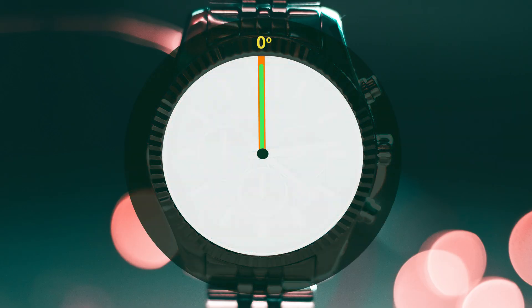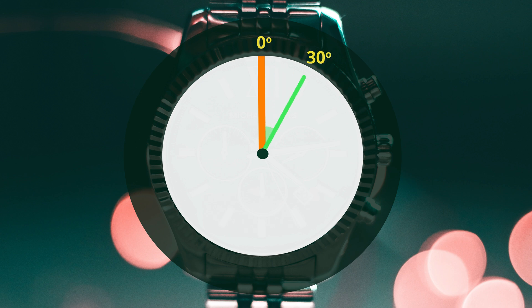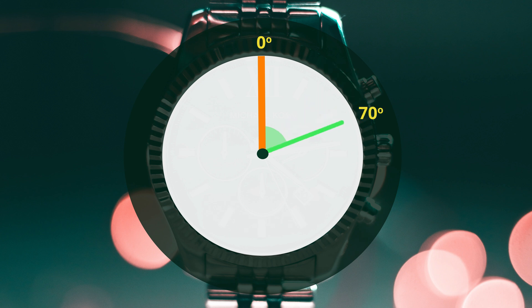In this clock the two hands are pointing up. The angle between the hands is zero. If we keep one hand still and turn the other hand, the angle becomes 10 degrees, 20 degrees, 30 degrees and so on. Now the size of this angle is 90 degrees. It's called a right angle.